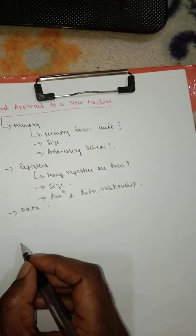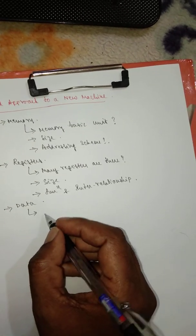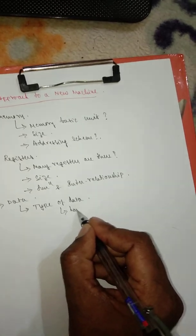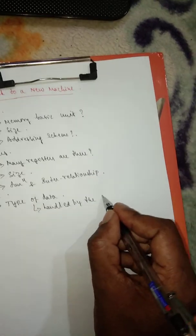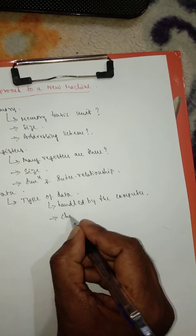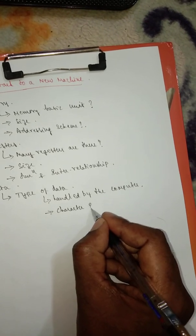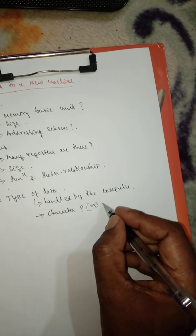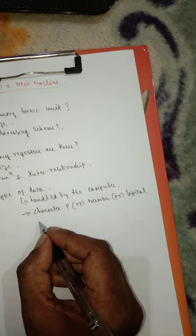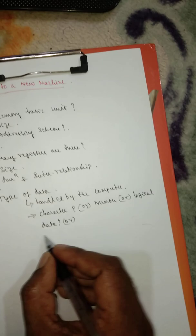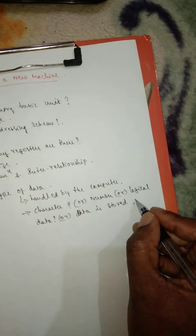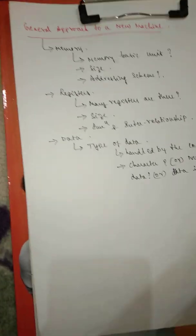The third category is regarding data. The first question we need to ask ourselves is what type of data can be handled by the computer — whether it can handle character data, numeric data, logical data, and how data is stored.